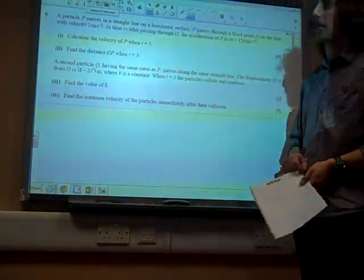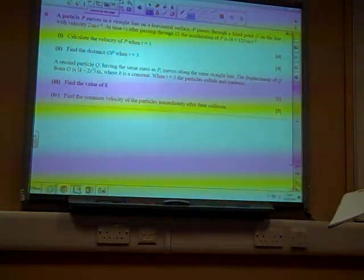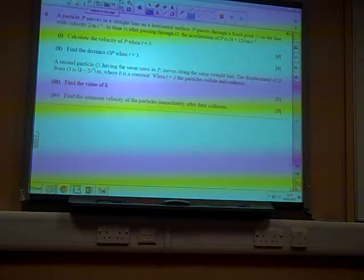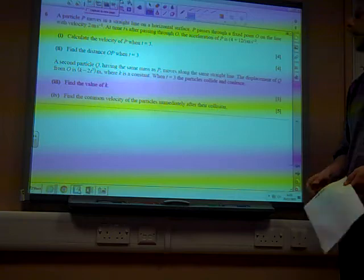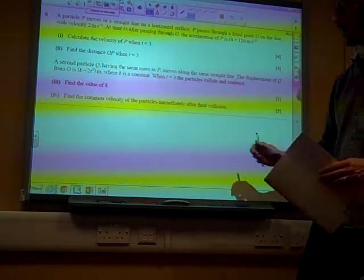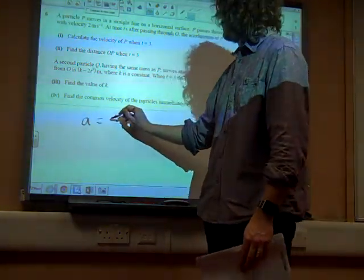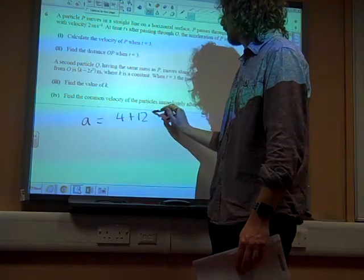We're on. Right, question 6. A particle P moves in a straight line on a horizontal surface, passes a fixed point of the line with velocity 2. At time t seconds after passing it, its acceleration is the value that's given there. So we've got acceleration is 4 plus 12t.